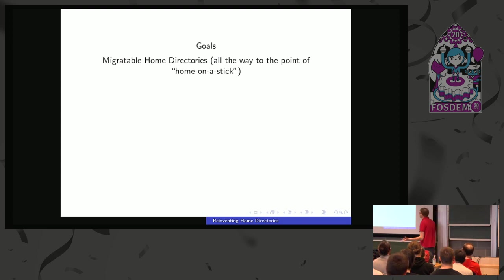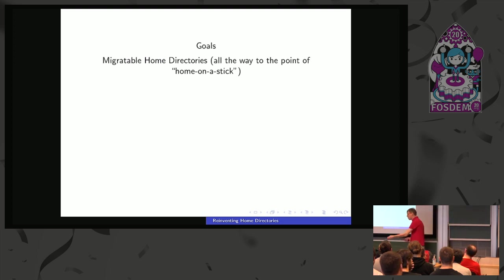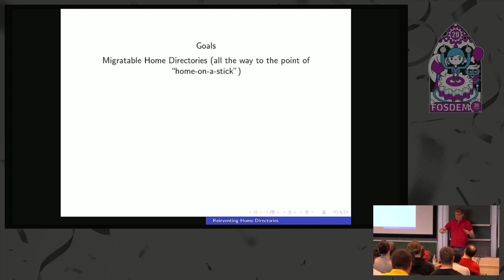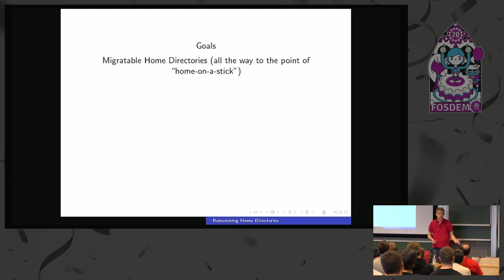One of the goals I find sexy is truly migratable home directories — all the way to having a home on a stick. By that I mean you have a USB stick, and it's not only where you store your home directory, it is your home directory. You can plug it into this laptop today, log in and it just works. You can take it out, put it in another laptop tomorrow, log in there, and it all just works. Migratable home directories means you have the actual data plus the account information all in one unified place, so you can take it from one system to another.